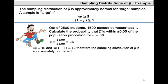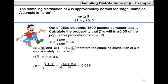The next step is to get our sampling distribution for P-bar. We need to check that N times P and N times 1 minus P are both at least 5. We find that N times 1 minus P is equal to 12, so we can conclude that the samples are large enough. Therefore the sampling distribution of P-bar is approximately normal with expected value 0.6, and the standard deviation of P-bar is the square root of P times 1 minus P divided by N. Plugging in the values including sample size N equal to 30, we find our final value rounded to 3 decimal places is 0.089.